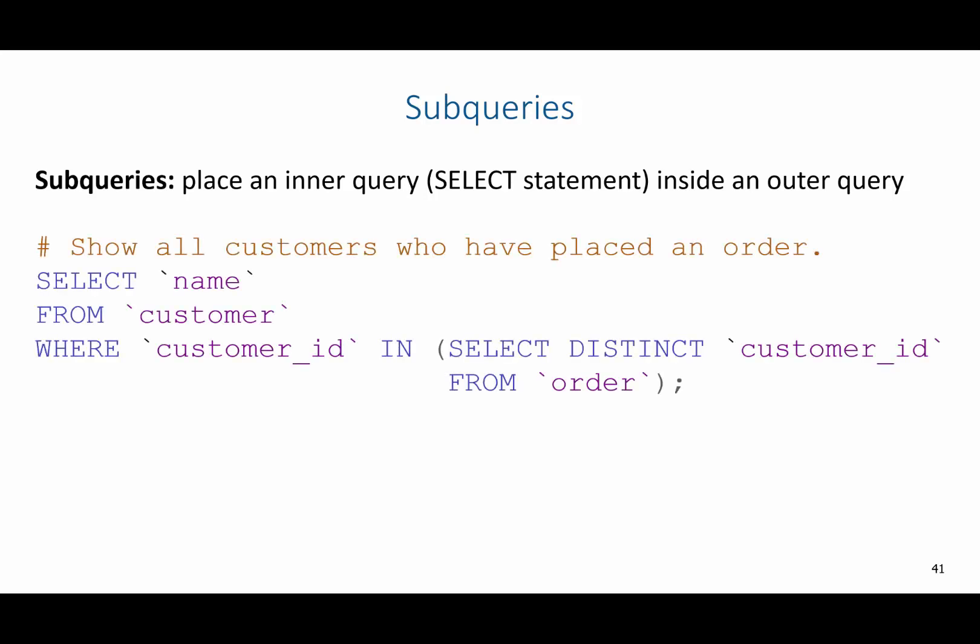For example, if I was asked to show all customers who have placed an order, I want to look for a list of all the customer IDs inside of the order table. To do this, I'd say select name from customer where customer ID is in, and then the subquery is select distinct customer ID from order. Running select distinct customer ID from order gives me all the unique customer IDs that have ever placed an order, and then I would look in that list and return the name of any matching customer.